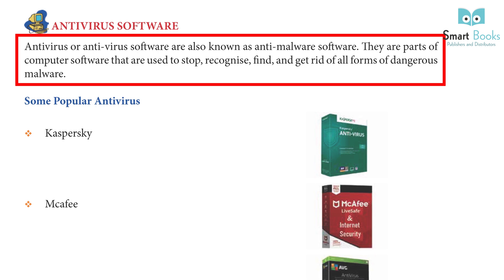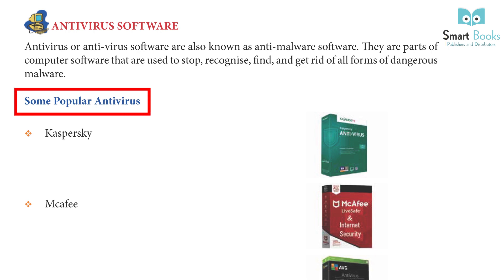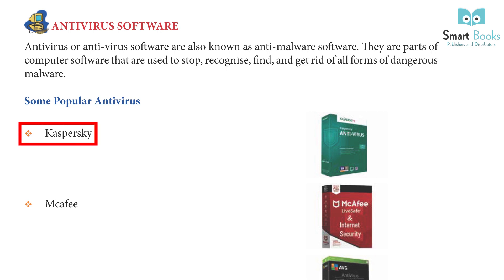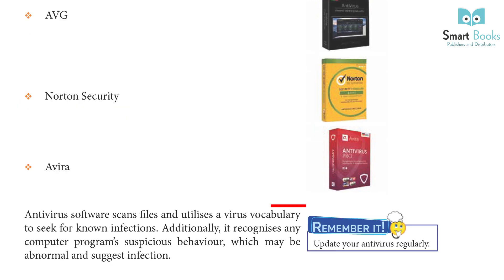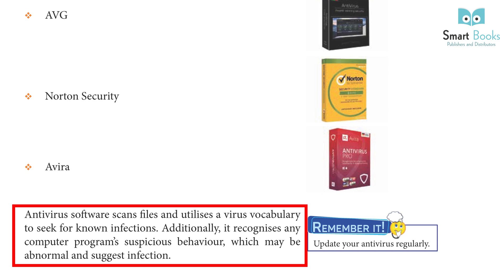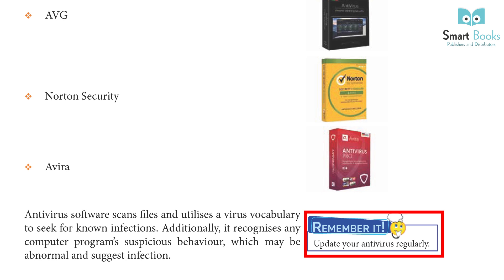Antivirus software, also known as anti-malware software, is part of computer software used to stop, recognize, find, and get rid of all forms of dangerous malware. Some popular antivirus programs: Kaspersky, McAfee, AVG, Norton Security, and Avira. Antivirus software scans files and utilizes a virus vocabulary to seek for known infections. It can also recognize suspicious computer program behavior that may indicate infection. Remember to update your antivirus regularly.